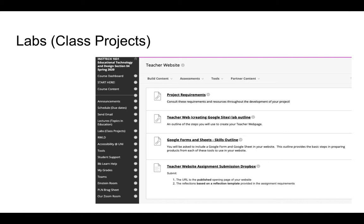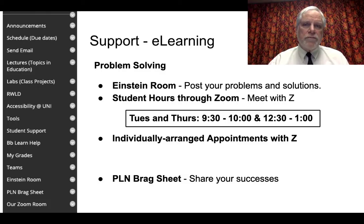As well as the project requirements, there are other materials in your content folder — things such as the teacher web lab outline, which is a step-by-step process for creating a teacher website. You're also going to be learning about using Google Forms and Slides, and we have an outline there on how to do that. Finally, there's a submission dropbox where you'll include the URL for your assignment as well as the reflection template.